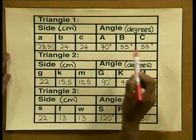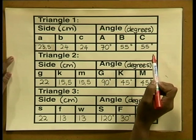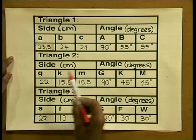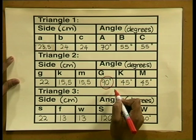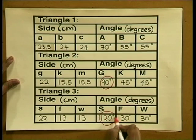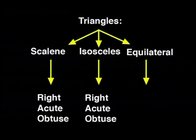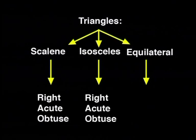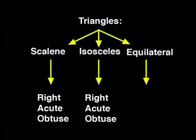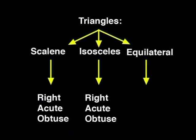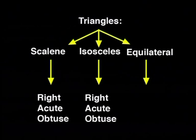The data from our table also tells us about the types of isosceles triangles we get. In triangle 1, all three angles are less than 90 degrees — this is called an acute angled triangle. In triangle 2, one angle is 90 degrees — this is known as a right angled isosceles triangle. In triangle 3, one angle is greater than 90 degrees — this is called an obtuse angled isosceles triangle. We have now defined isosceles triangles into three types and can develop our tree diagram. Previously, scalene triangles were broken up into acute, obtuse, and right angled. Similarly, isosceles triangles can be broken up into acute angled, obtuse angled, and right angled isosceles triangles.